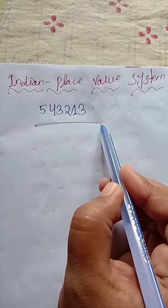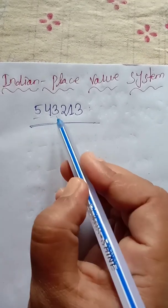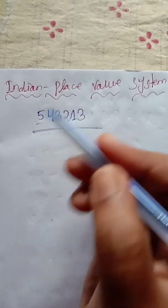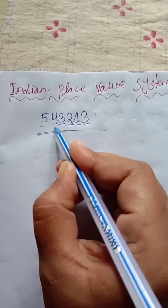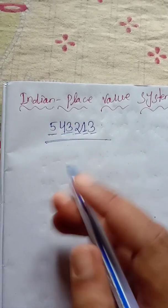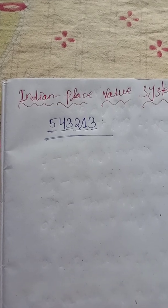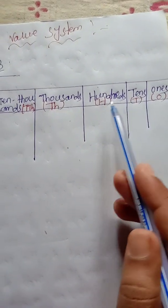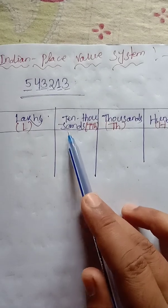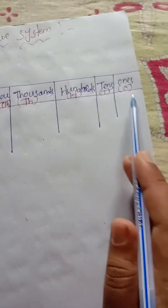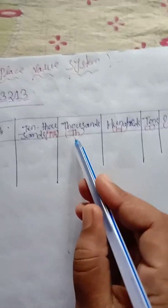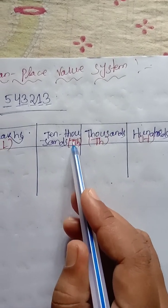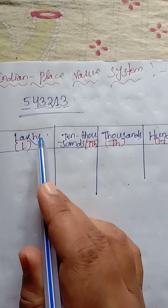We will find out the place values of these digits. First, you will see how many digits this number has. There are 1, 2, 3, 4, 5, and 6 digits. So this number has 6 places. These 6 places are: ones (O), tens (T), hundreds (H), thousands (TH), ten-thousands (TTH), and lakhs (L). O means ones, T means tens, H means hundreds, TH means thousands, TTH means ten-thousands, and L means lakhs.